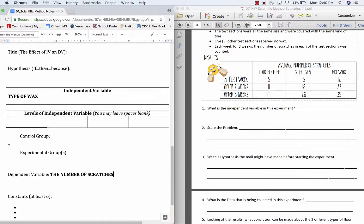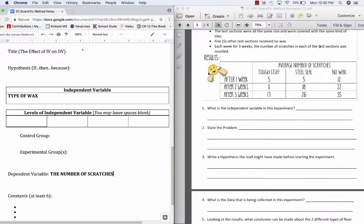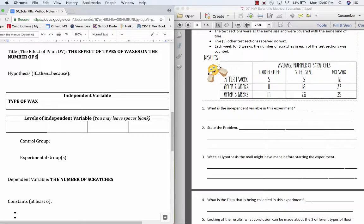Now that we've stated what our independent and dependent variables are, we're able to actually title this experiment scientifically. We will use this format. We always start with the effect of, and then we just plug in our independent variable: the effect of types of waxes on - so what is the type of wax going to affect? Well, it's hopefully going to affect the number of scratches in this case, which is our dependent variable.